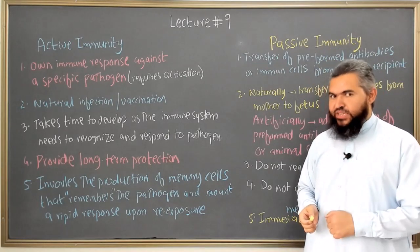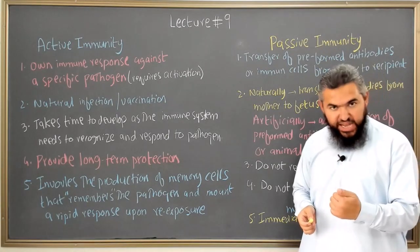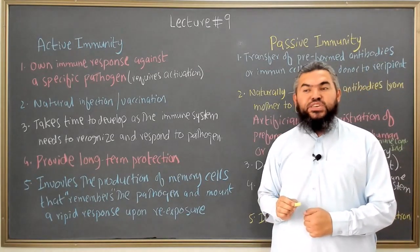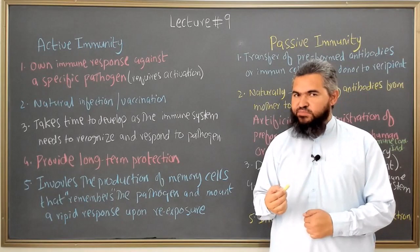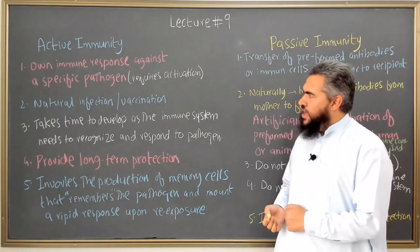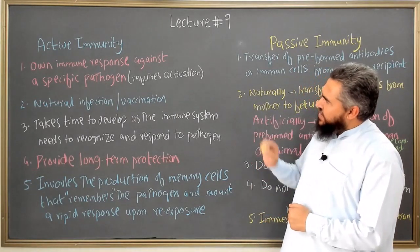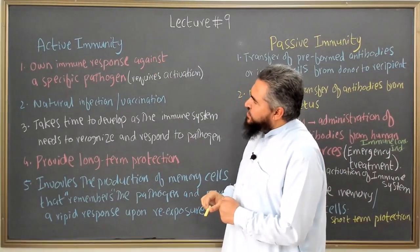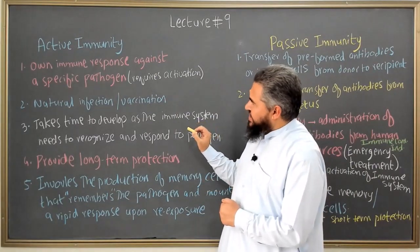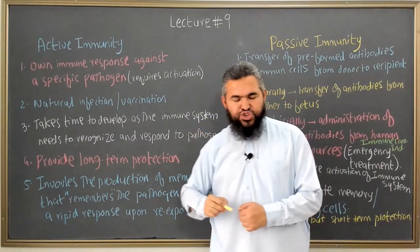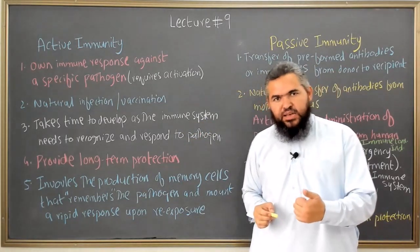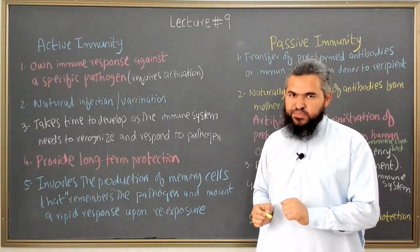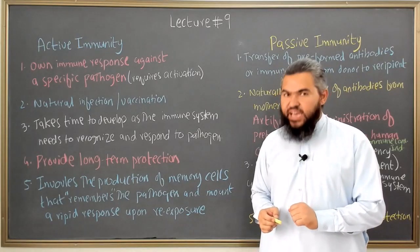So if there is passive immunity, that means there will also be active immunity. In this video I am going to give you the differences between active immunity and passive immunity. Active immunity is the body's own immune response against a specific pathogen — that means your body is creating its own immune response against that particular pathogen.